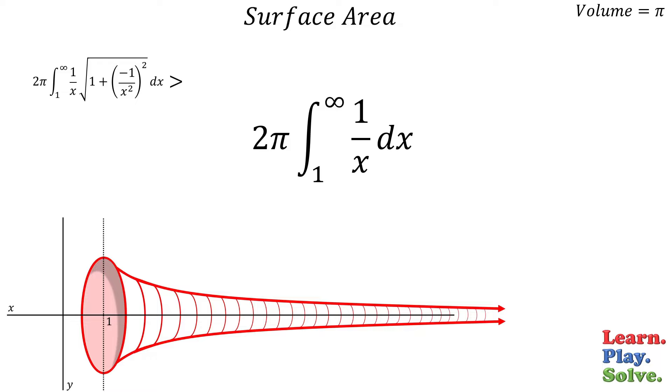The antiderivative of 1 over x is the natural log of x. Evaluated from 1 to infinity, we get this. The natural log of 1 is 0. And the natural log of infinity is infinity.